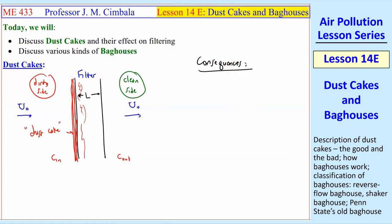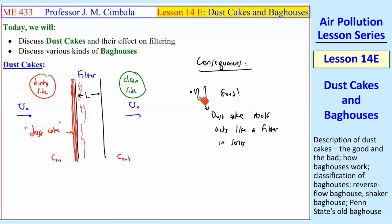What are the consequences of this dust cake that builds up? Well, the efficiency goes up, so that's good. What happens is the dust cake itself acts like another filter in series with the real filter. So this dust cake is actually collecting particles by itself like a filter, making eta go up. That's a great thing, so why don't we just let the dust cake keep building up?